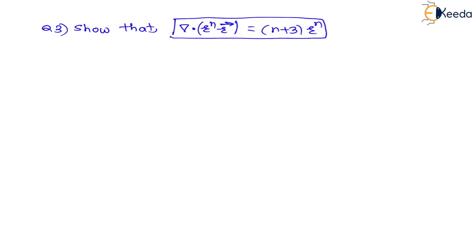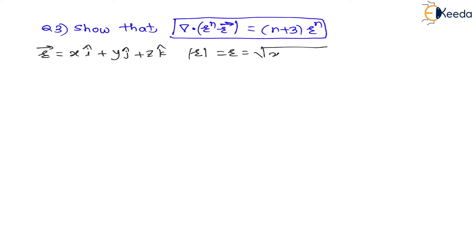We know that vector r is the position vector x·î plus y·ĵ plus z·k̂. Here r is the magnitude of vector r. So let us find the magnitude first. The magnitude of vector r equals √(x² + y² + z²), which is (x² + y² + z²)^(1/2).